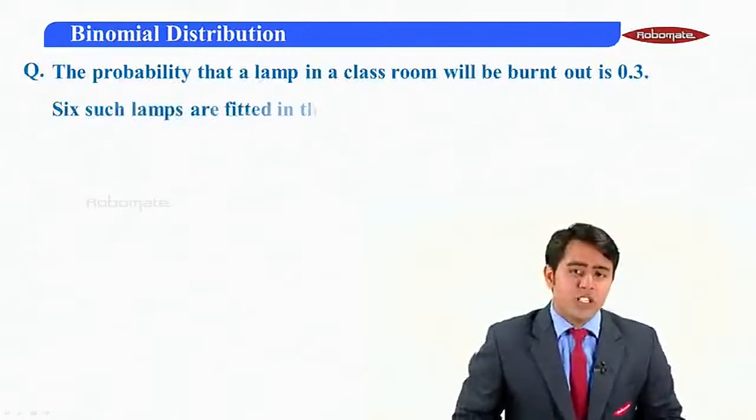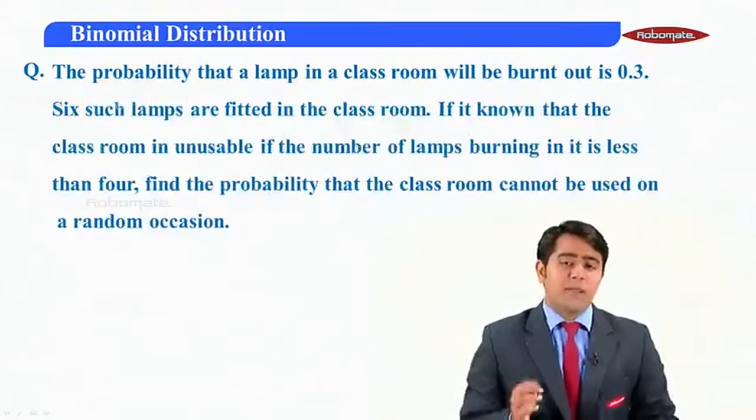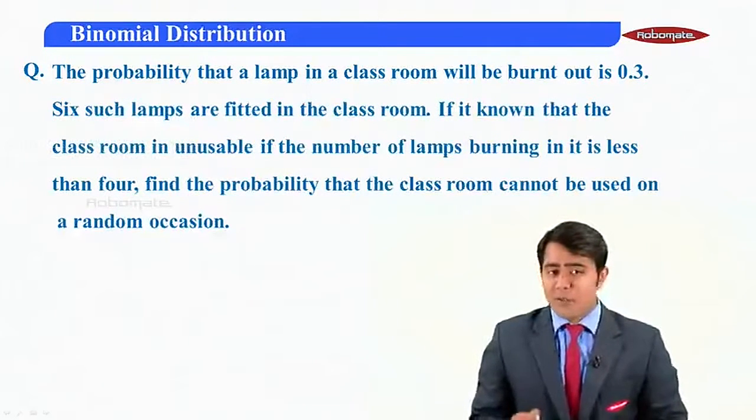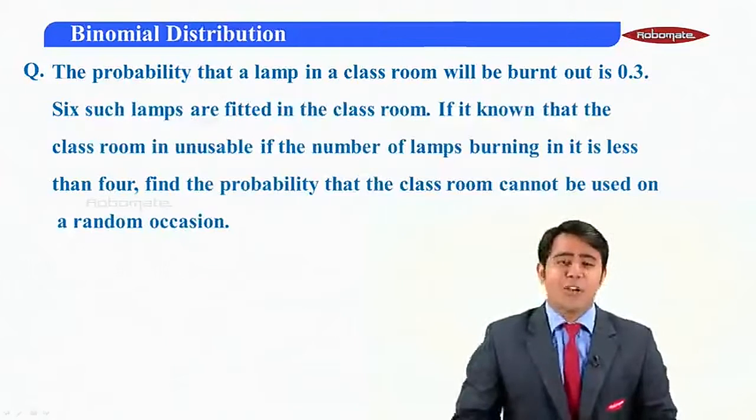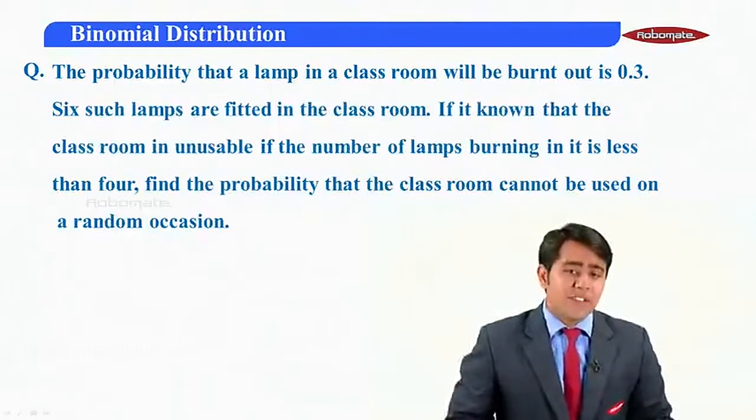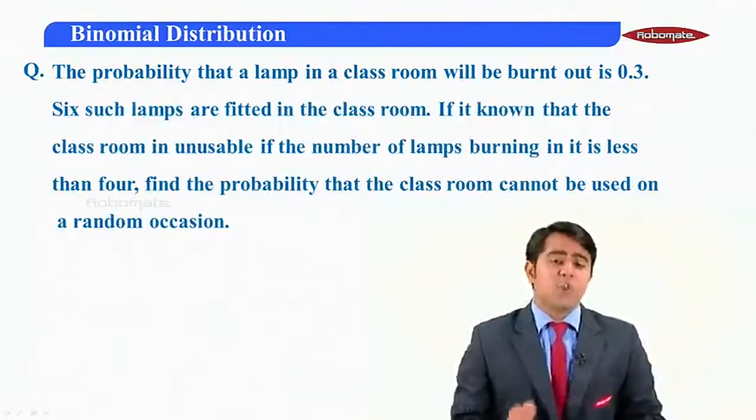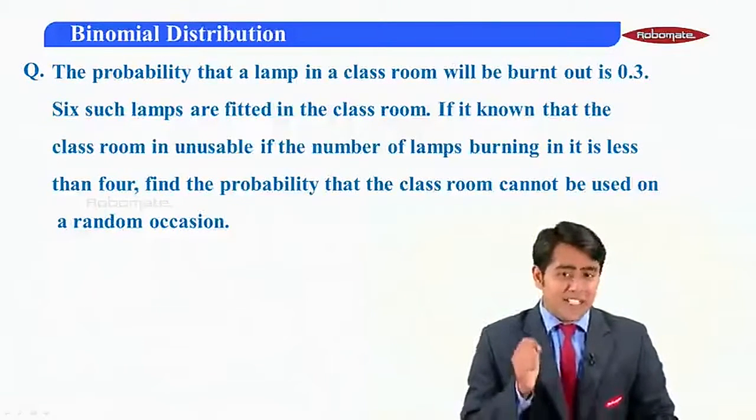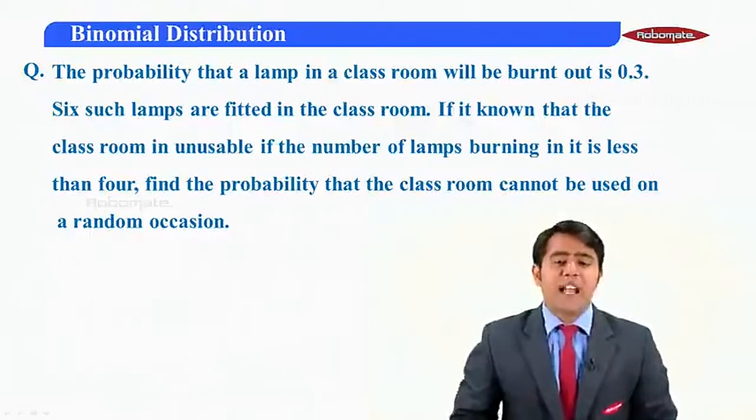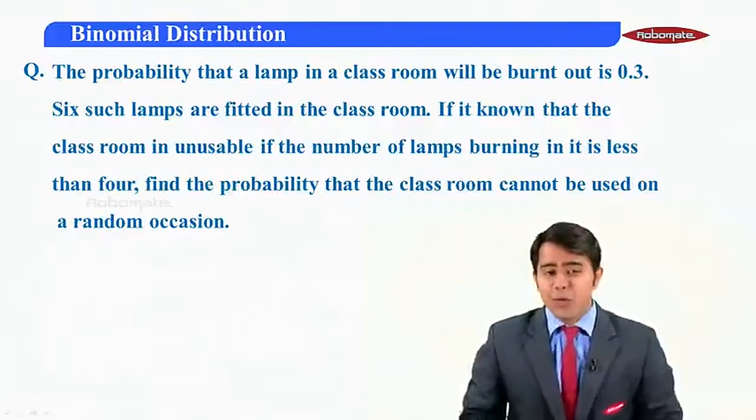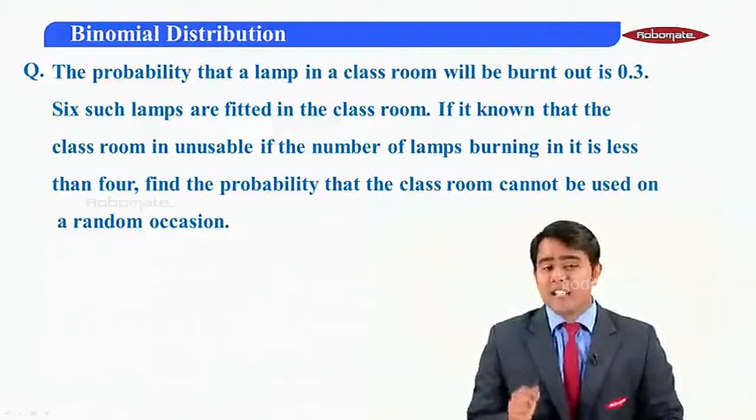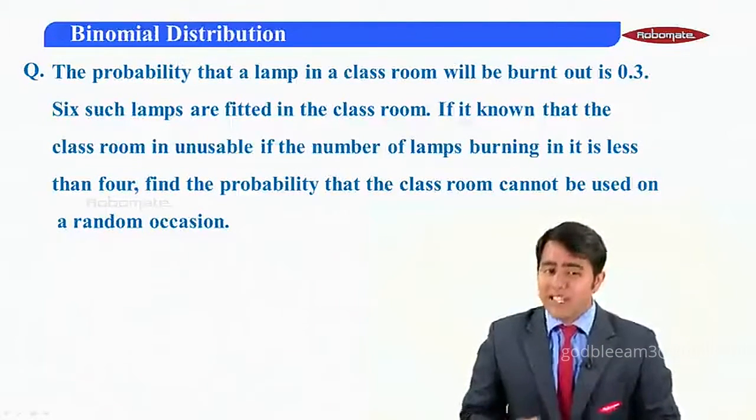So the question given to us here is as follows. The probability that a lamp in a classroom will be burnt out is 0.3. Six such lamps are fitted in the classroom. If it is known that the classroom is unusable if the number of lamps burning in it is less than four, find the probability that the classroom cannot be used on a random occasion.